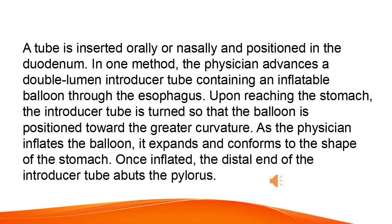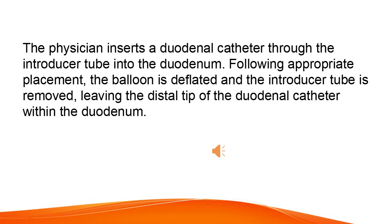A tube is inserted orally or nasally and positioned in the duodenum. In one method, the physician advances a double lumen introducer tube containing an inflatable balloon through the esophagus. Upon reaching the stomach, the introducer tube is turned so that the balloon is positioned toward the greater curvature. As the physician inflates the balloon, it expands and conforms to the shape of the stomach. Once inflated, the distal end of the introducer tube abuts the pylorus. The physician inserts a duodenal catheter through the introducer tube into the duodenum. Following appropriate placement, the balloon is deflated and the introducer tube is removed, leaving the distal tip of the duodenal catheter within the duodenum.